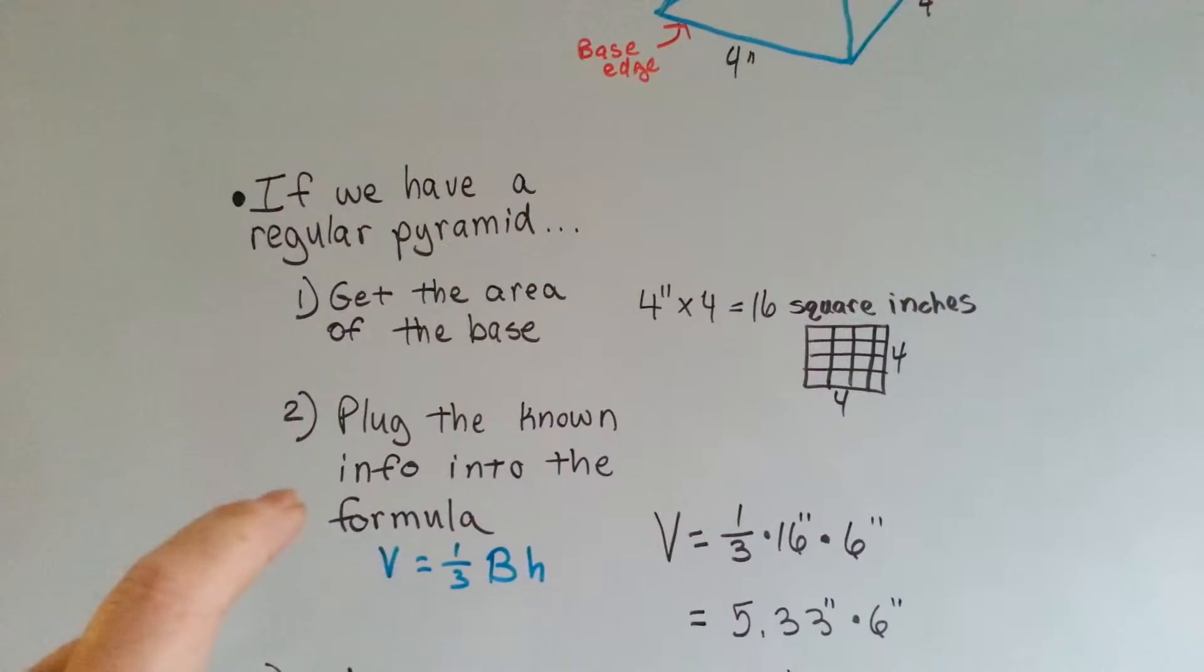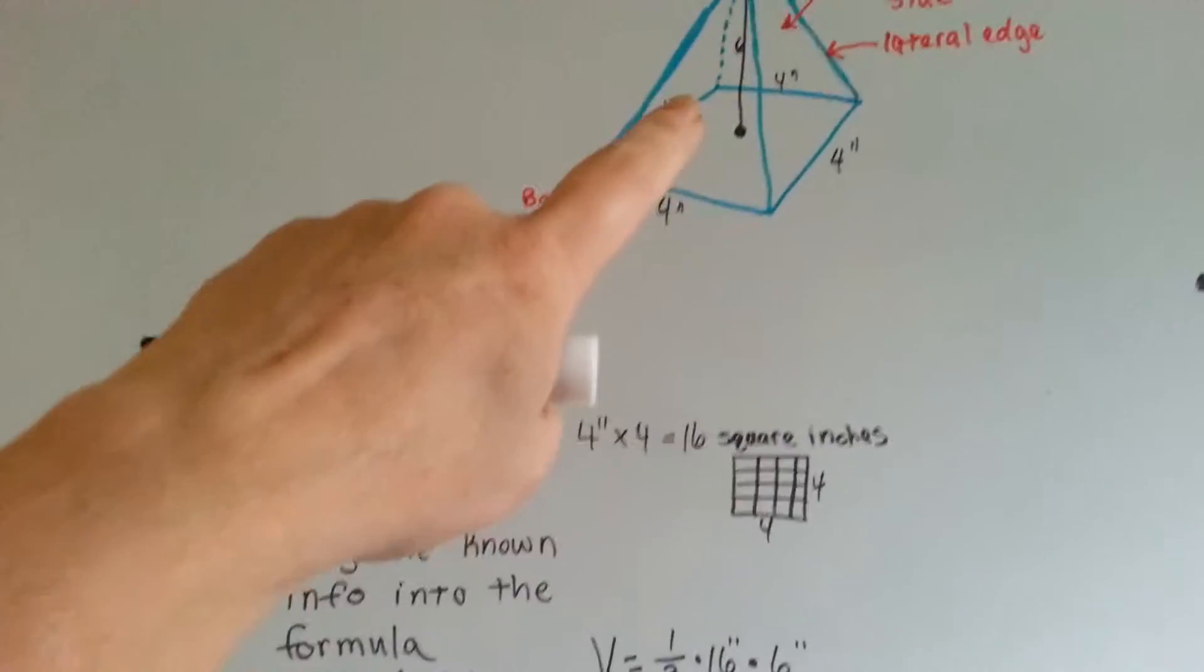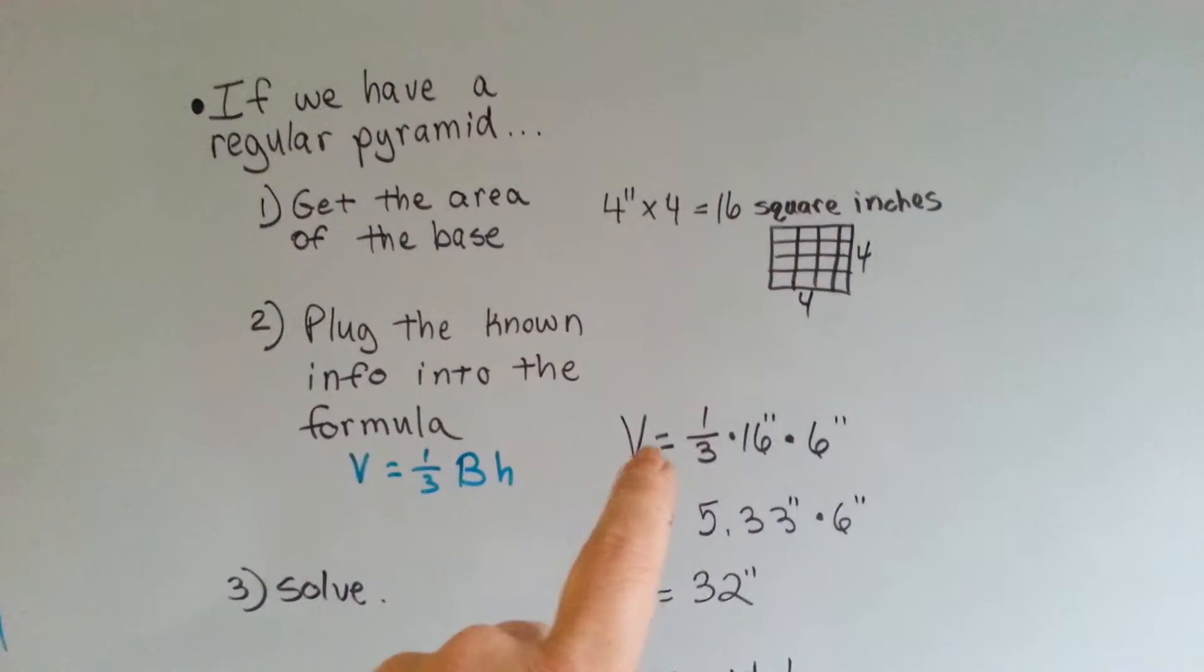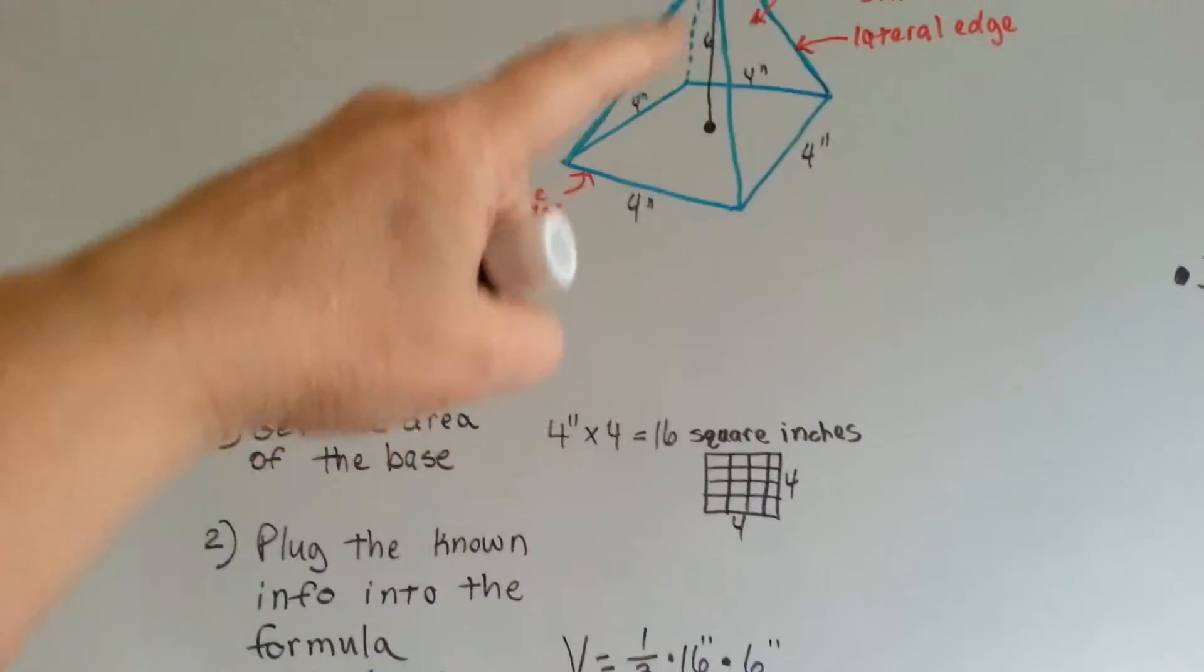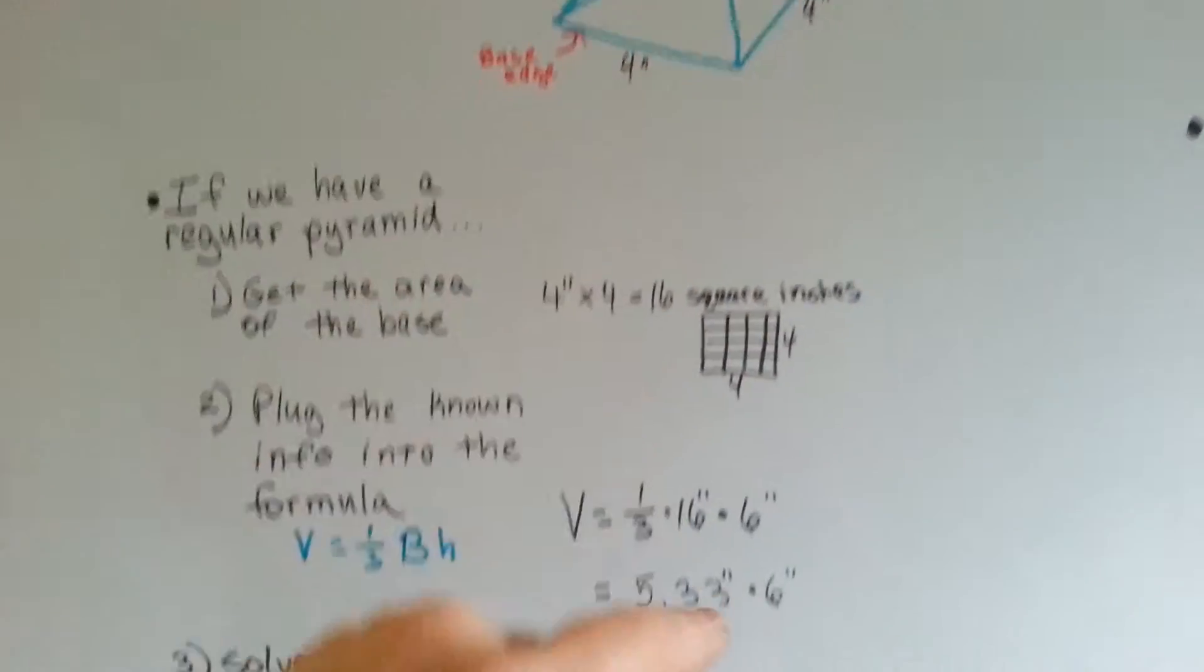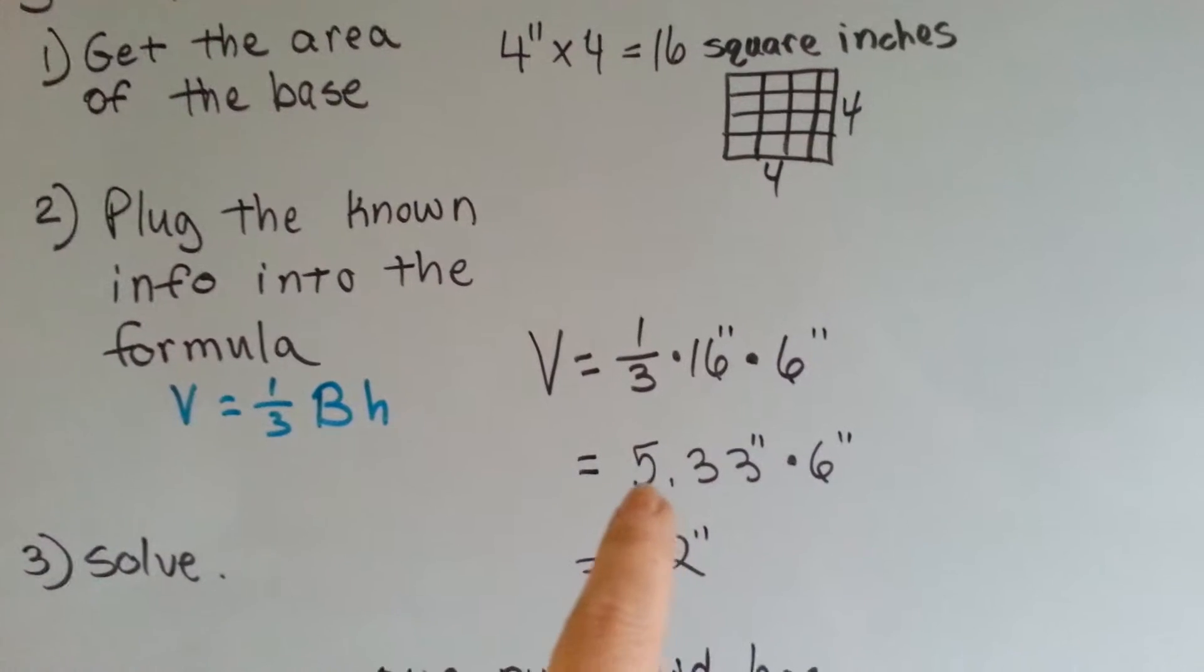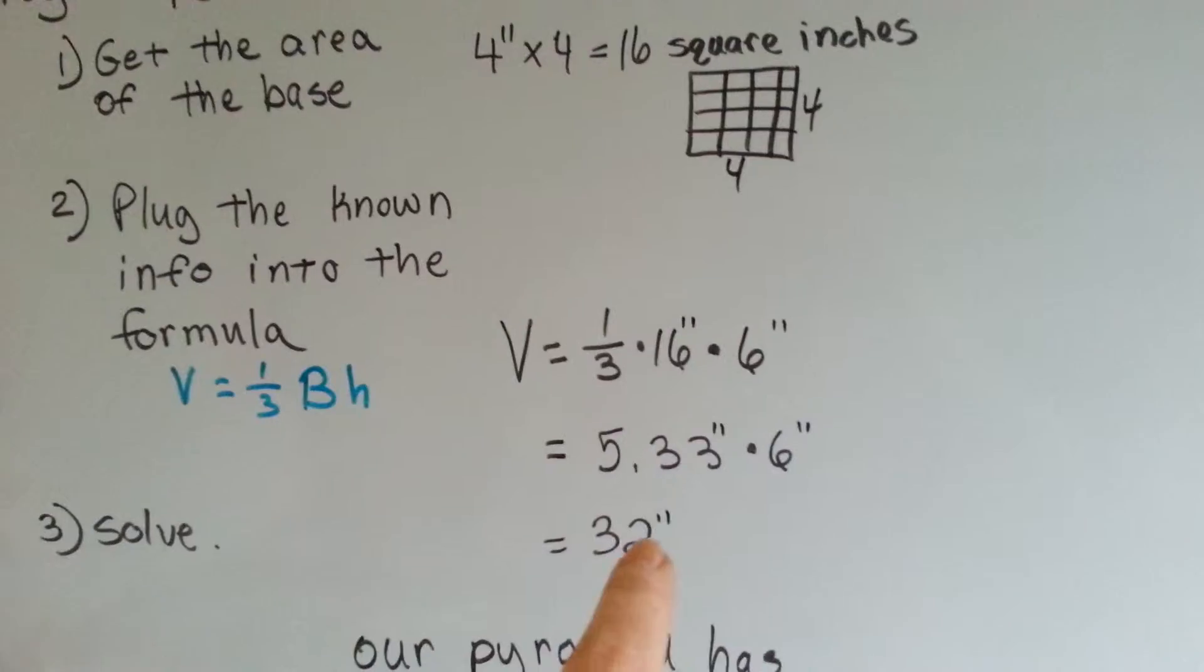We plug the known info into this formula. So, now we have the base, and we have the height. We know that it's 6. We say the volume is one-third of this 16 inches times the 6 inch height. We do our math. One-third times 16 is 5.33. We multiply that by 6, and we get 32 inches.